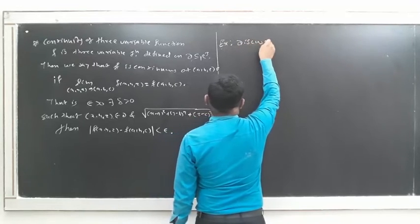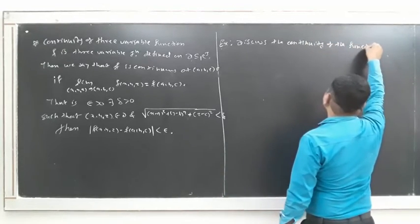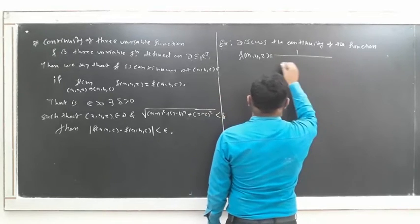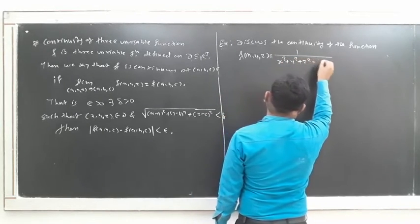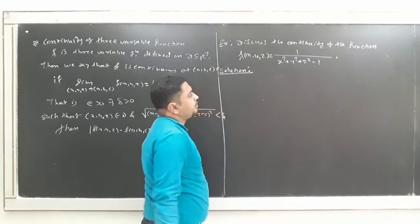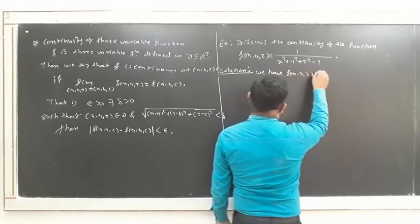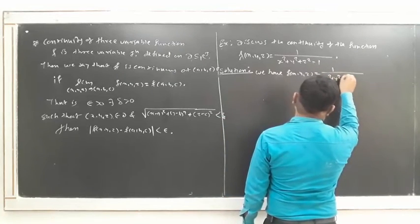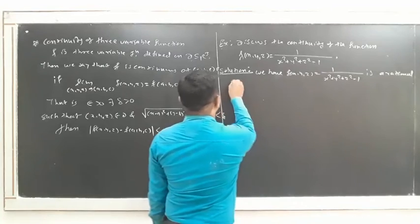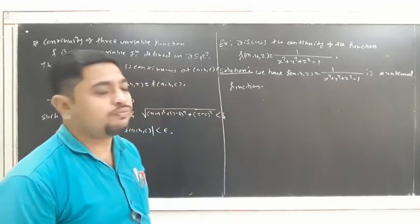Example: Discuss the continuity of the function f(x, y, z) = 1 / (x² + y² + z² − 1). The given function f(x, y, z) = 1 / (x² + y² + z² − 1) is a rational function. It is a rational function, therefore it is continuous where the function is defined.